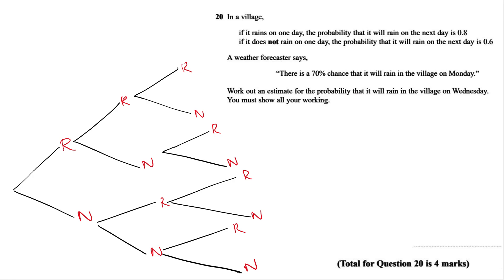Hi everyone and welcome to our video on a probability question aimed at higher tier math students. The question states: in a village, if it rains on one day the probability that it will rain the next day is 0.8. If it does not rain on one day, the probability that it will rain the next day is 0.6. The weather forecast says there is a 70% chance it will rain on Monday. Work out an estimate for the probability it will rain on Wednesday. Show all working — it's worth four marks.